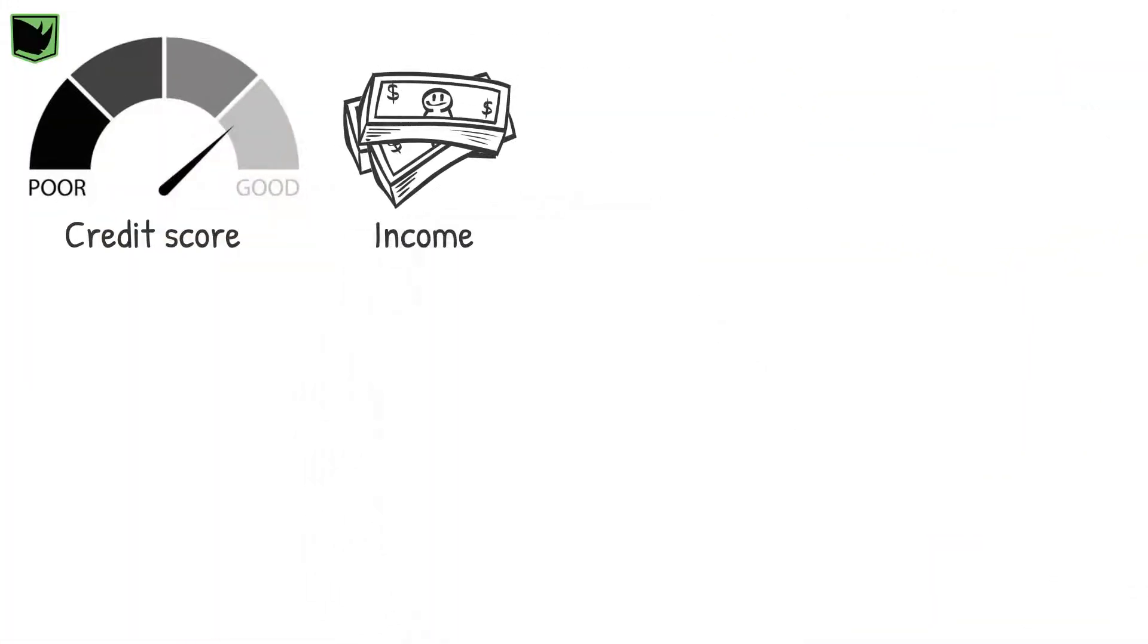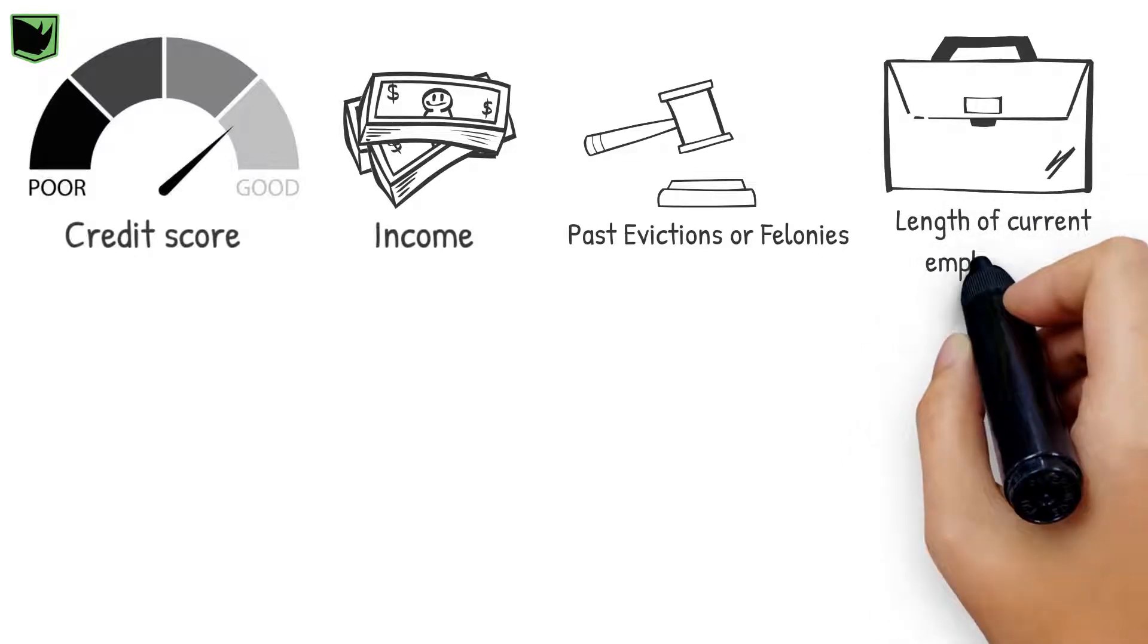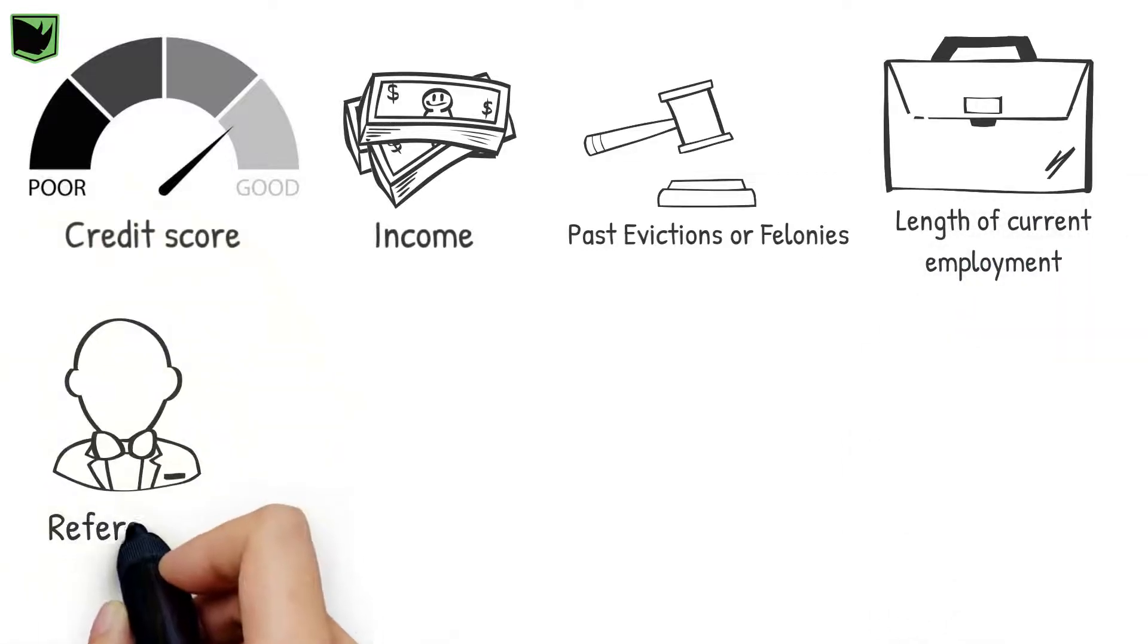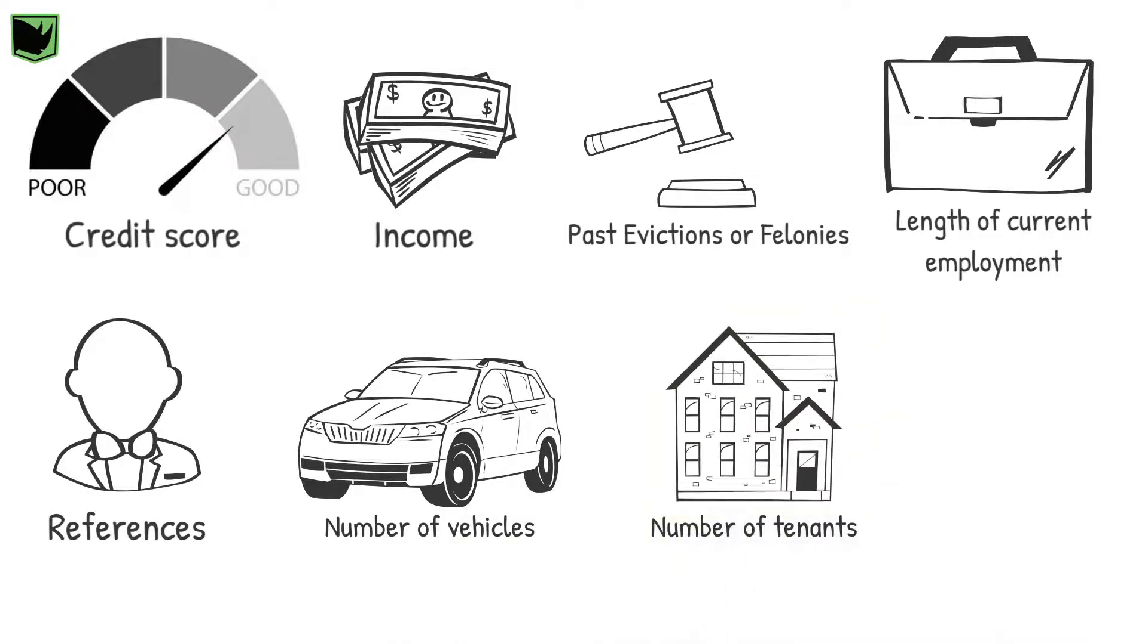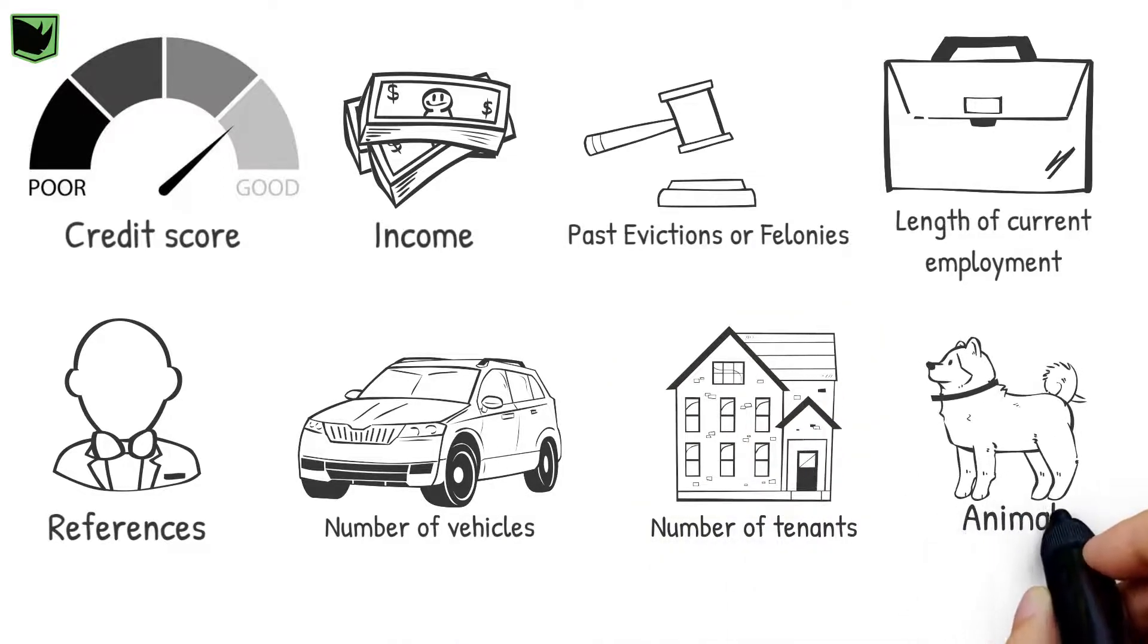Credit score, income, past evictions or felonies, length of current employment, references, number of vehicles, number of tenants, and animals if applicable.